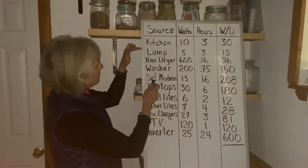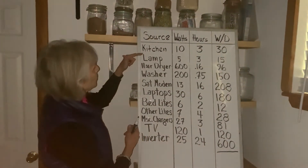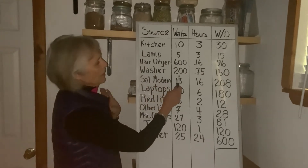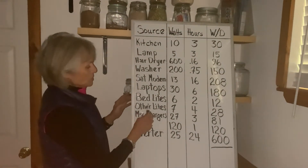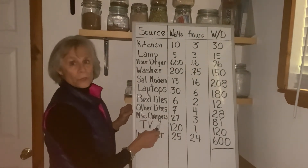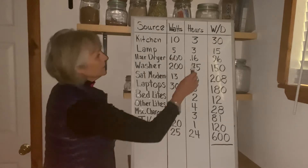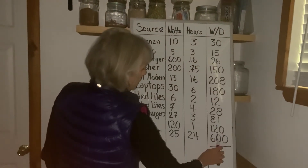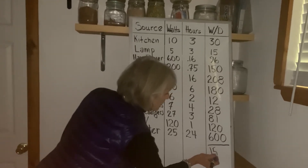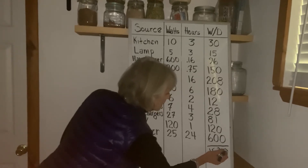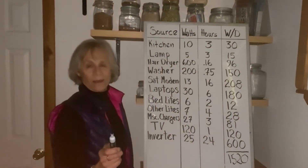We have finished our list of all the things in the house that use electricity. We went over the kitchen lights, the washer — with fractional numbers since I don't use it every day — the satellite modem, laptops, miscellaneous lights, chargers for phones and Kindles, TV, and the big one, our inverter. Adding these all up gives us 1,520 watts — that's the number of watts our batteries have to provide every day to keep the lights on.